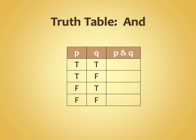So we have this truth table, and you're going to see these a lot. True AND true — if both statements are true — is a true statement. True AND false would be a false statement. False AND true would be a false statement. And false AND false would be a false statement.